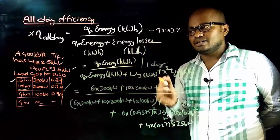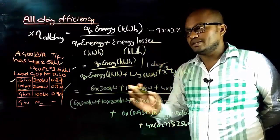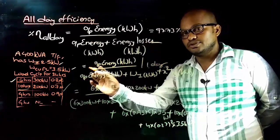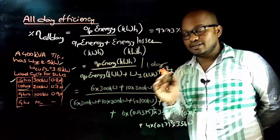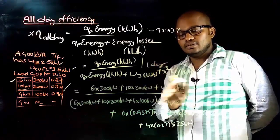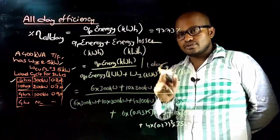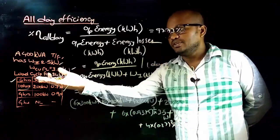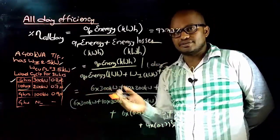This is how we find the percentage all-day efficiency of a distribution transformer using load cycle data. First, find x for each load period, then use x to calculate the copper losses for different durations.